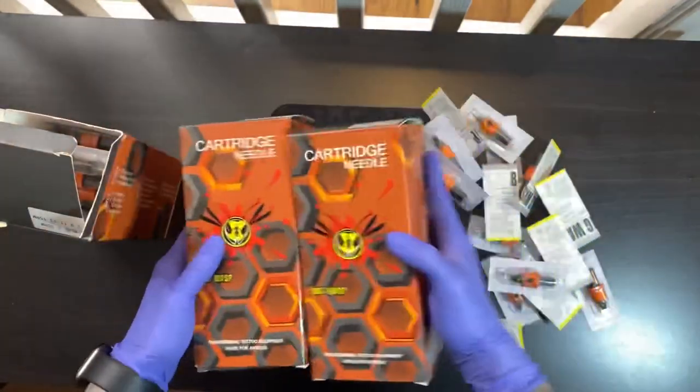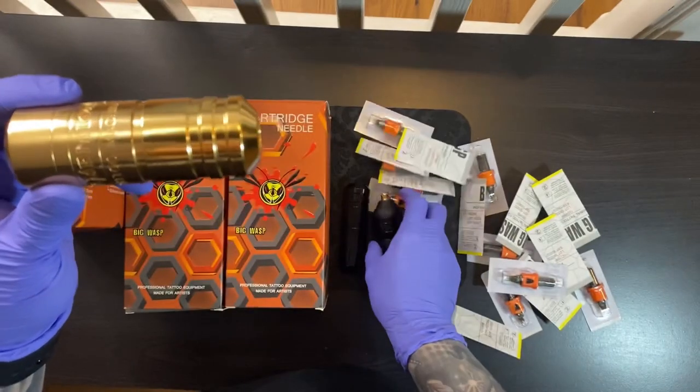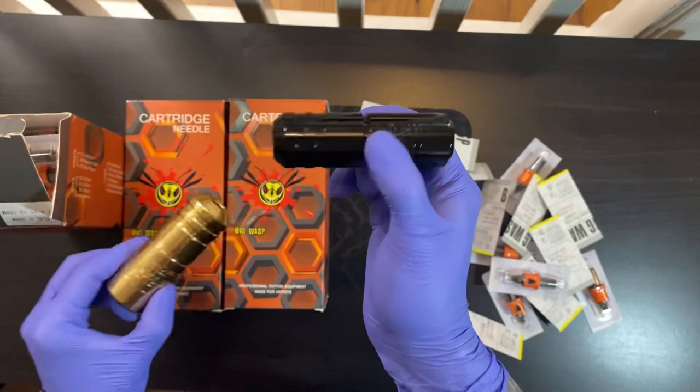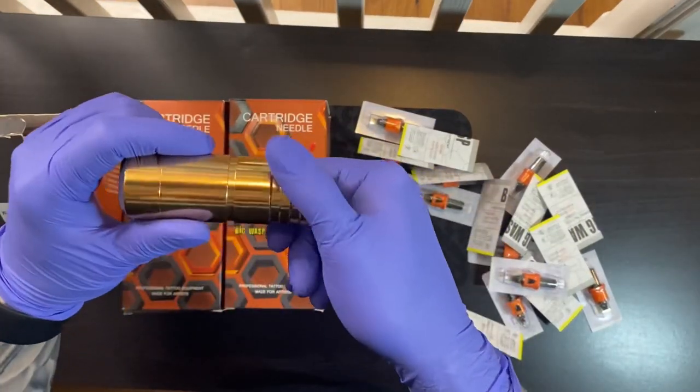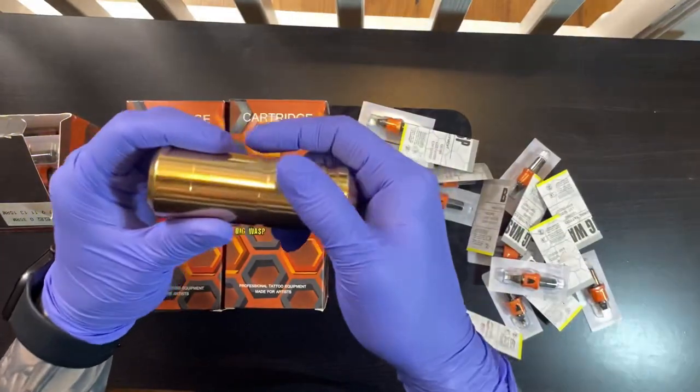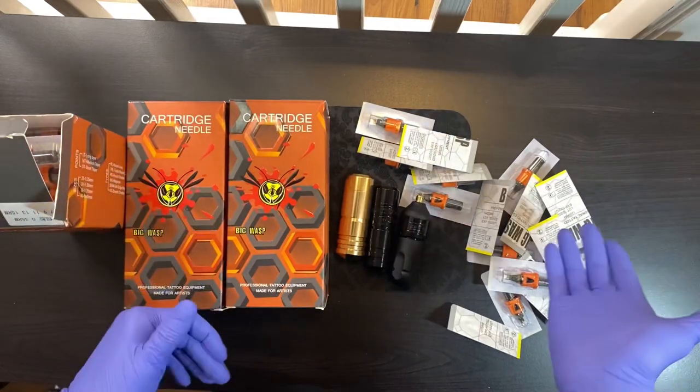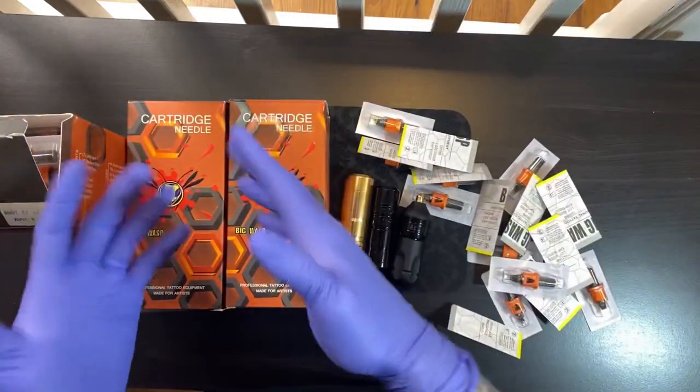I don't see anyone not liking them. They fit on the Bishop Wand Liner, the Ambition Torped Machine, the Ambition Mini Torped Machine, the Bishop Packer, and the Ambition Mars. Every machine that I've tried these cartridges with fit, and they never give me any issues. They're all easy to take in and out, including the bigger size mags and the smaller size liners.